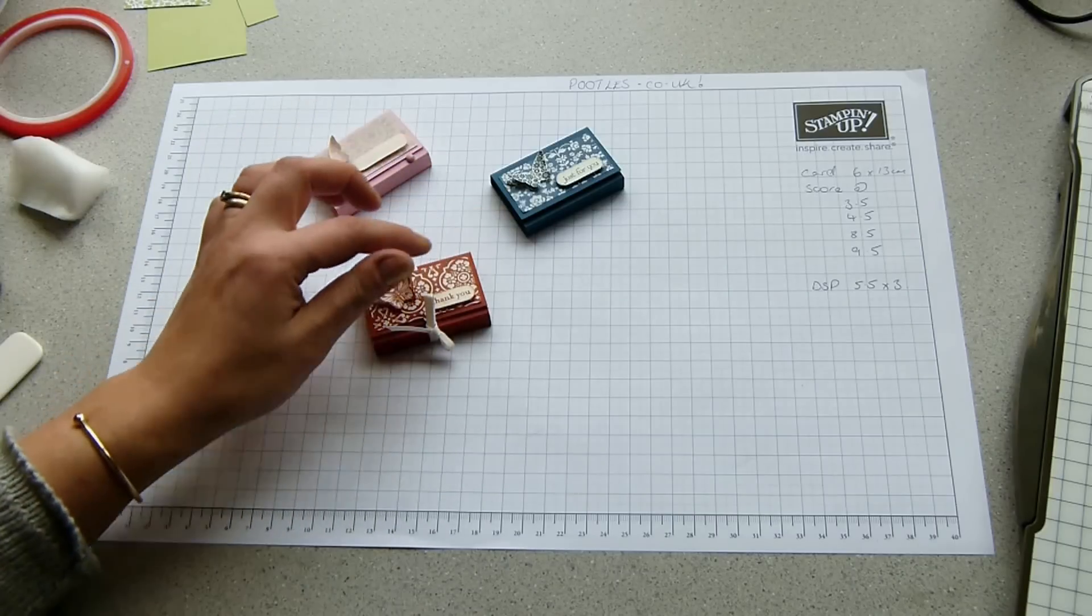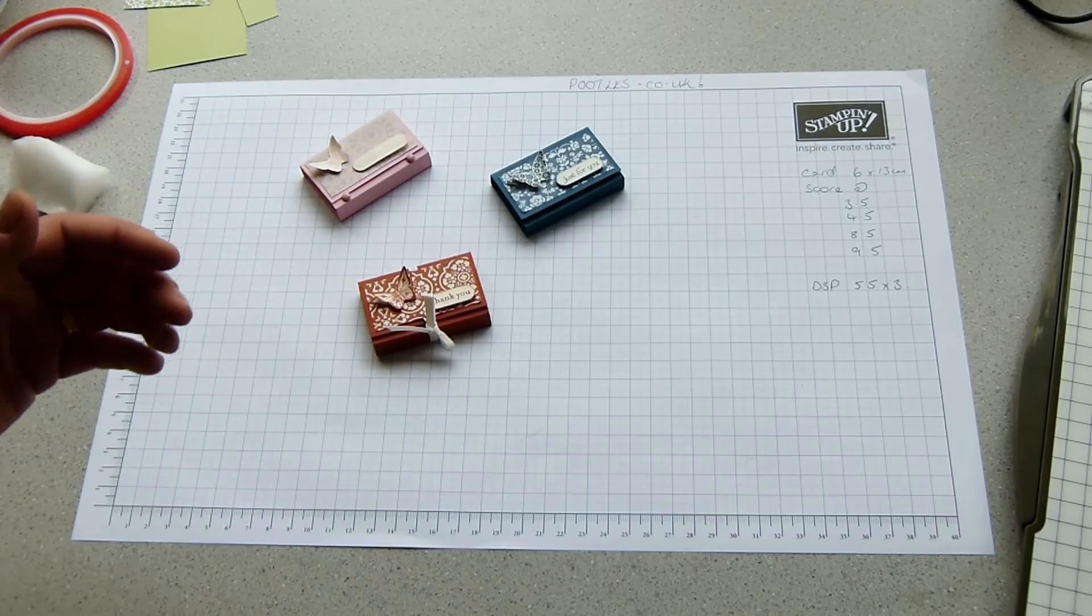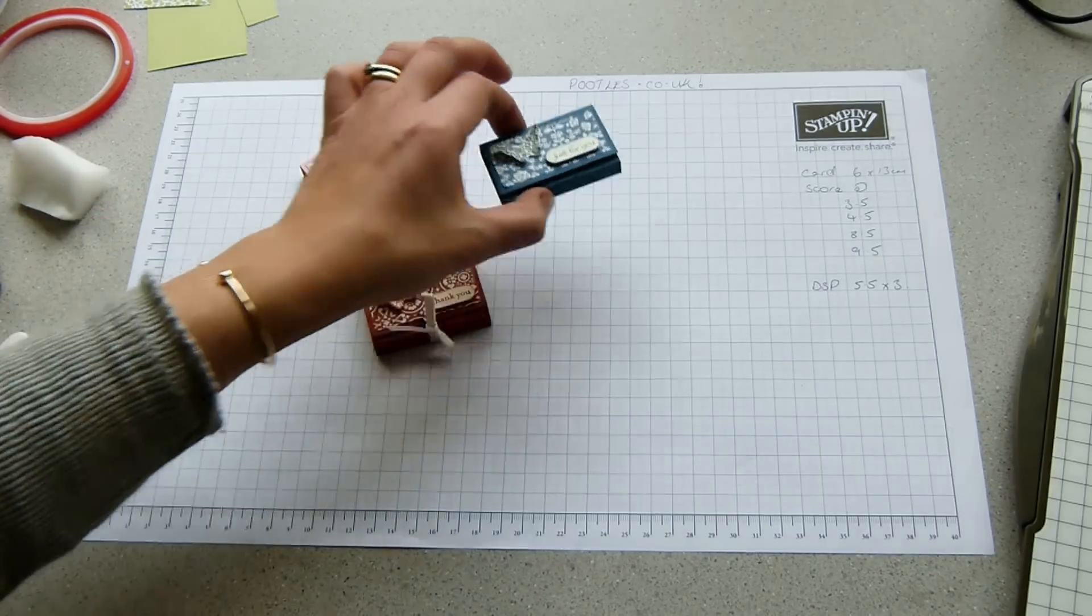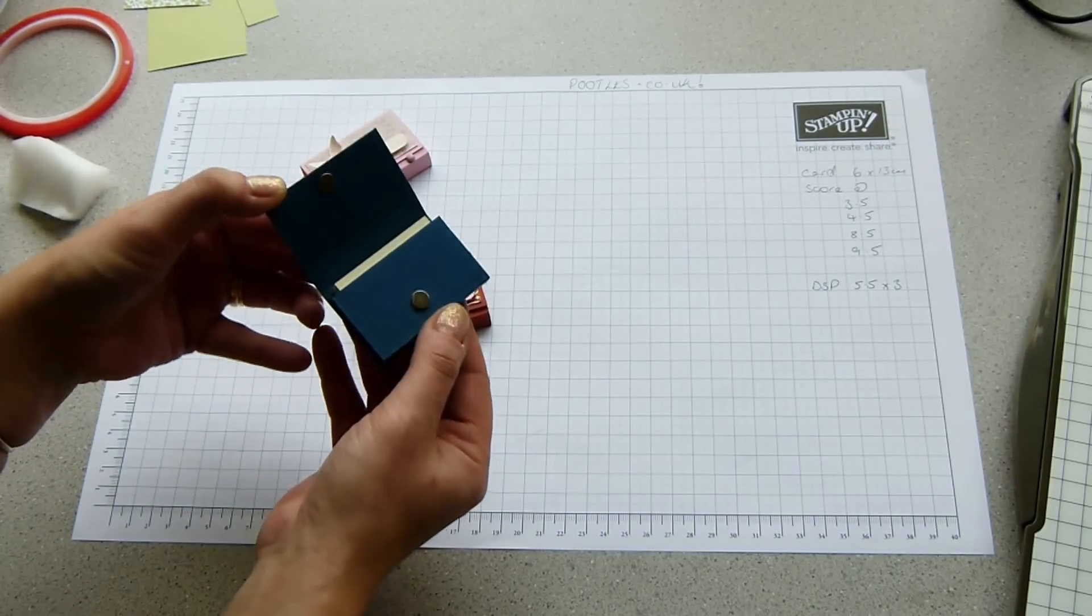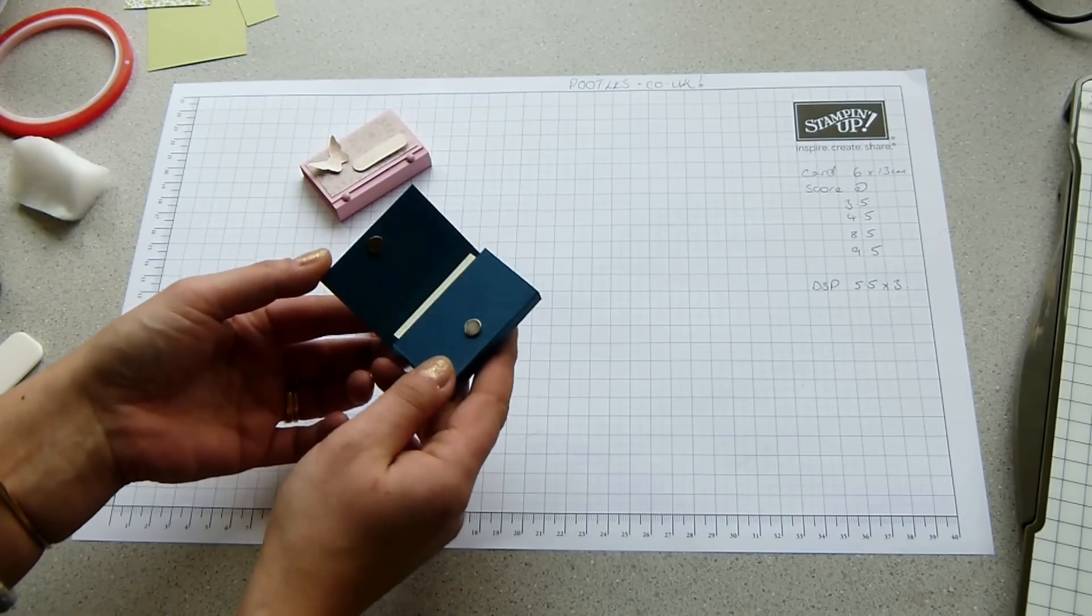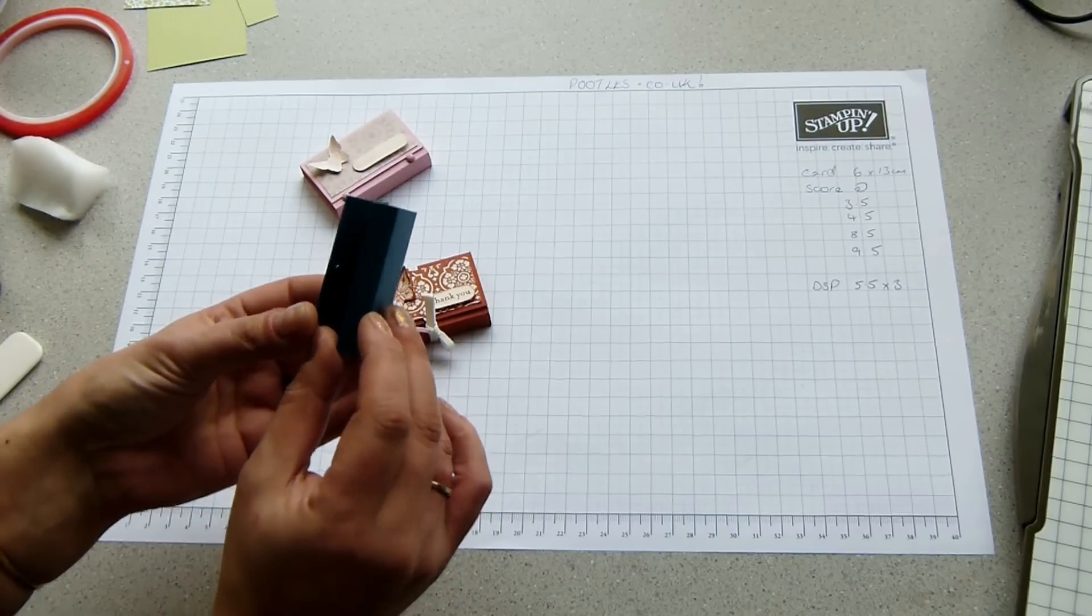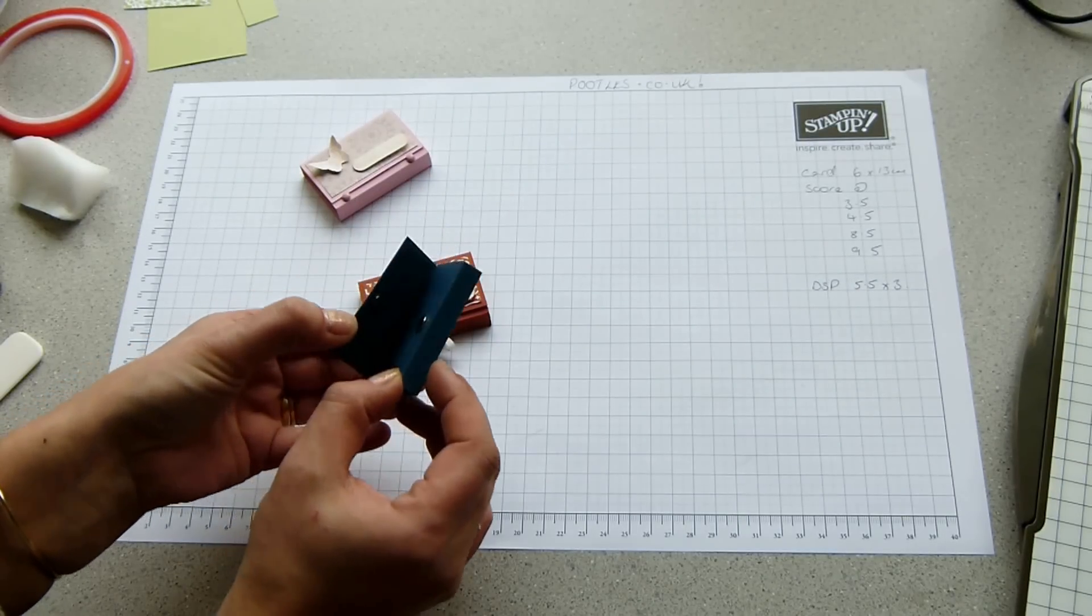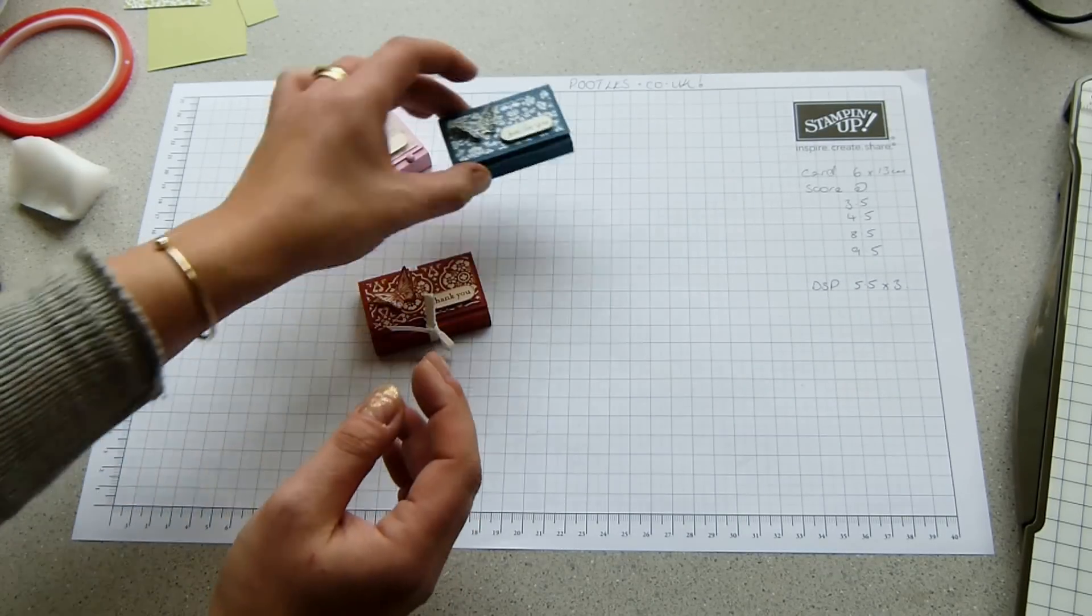I've got three different styles of closure here because obviously we all have access to different things. So I've got one here that I have sealed with magnets, which are quite high strength. You pick them up off eBay, places like that. They're about three quarters of a millimeter thin, but they're very strong, as you can hear.